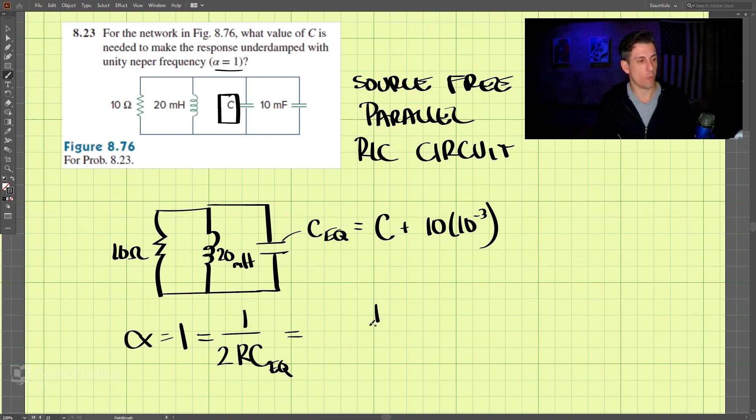So by doing that, we have 1 divided by 2 times R, which is 10 times C, C plus 0.01. 10 times 10 to the negative third.